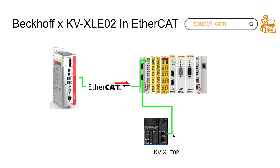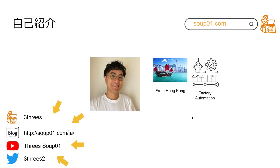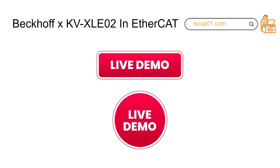By using EtherCAT slave, you can make real-time communications with Beckhoff — not just Beckhoff — with an EtherCAT master. Before I continue my tutorial, let me introduce myself. I am Chris, I come from Hong Kong and I'm working in factory automation. In the lower left corner you can find my Twitter, my blog, and my YouTube. If you like my channel you can follow it and ask me questions there. Now we can start our live demo, let's go.